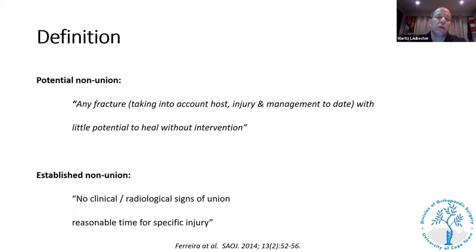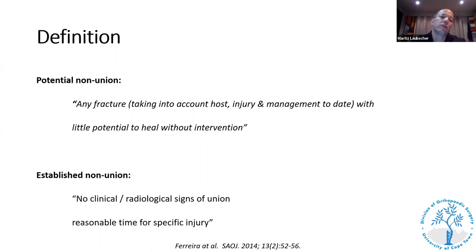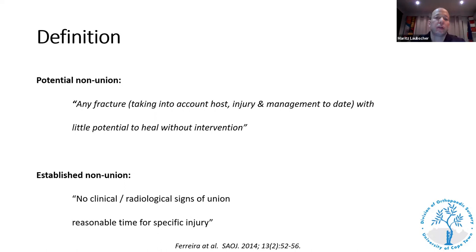Upper limb fractures heal a bit quicker than lower limb fractures, so we can't have one definition for every fracture. I prefer the definition suggested by Nando Ferrara in his article on tibial non-unions, which includes a 'potential non-union' — any fracture with little potential to heal without intervention — and an 'established non-union' with no clinical or radiological signs of union in a reasonable timeframe. In other words, you can decide at any stage to intervene if you think the fracture won't heal without it.